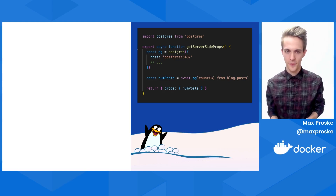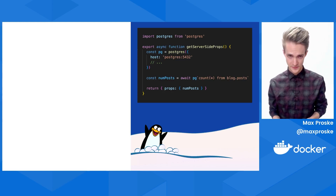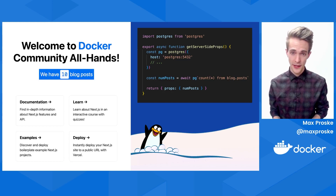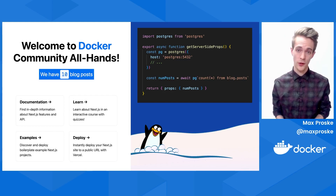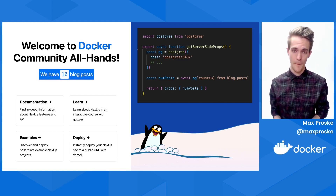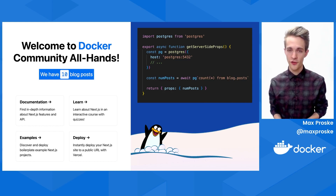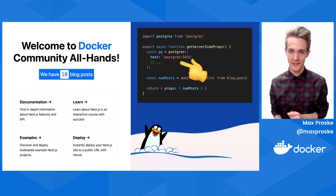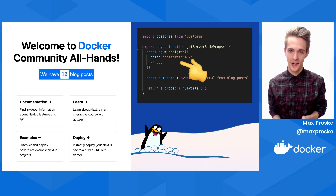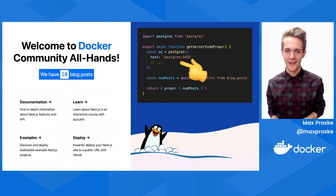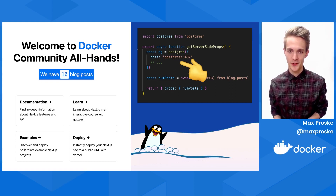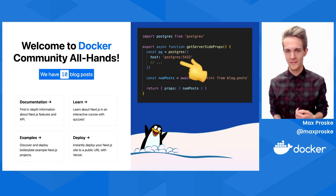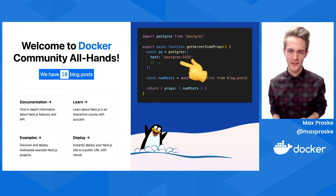We just have to grab some value from the database, display it, and we have something that more closely resembles a full-stack app. Another fun trick: we're not referencing Postgres by localhost — we're referencing it by name. Docker allows apps to talk directly with each other over the Docker network without their actual ports even needing to be exposed to the public internet.